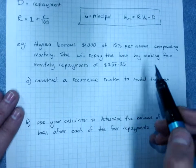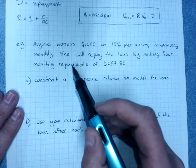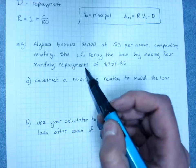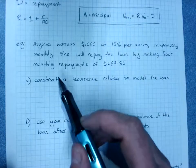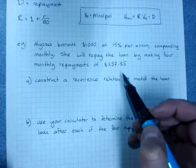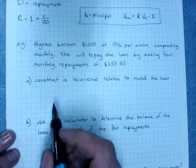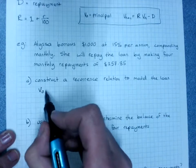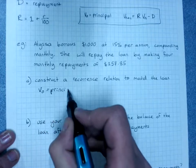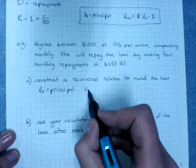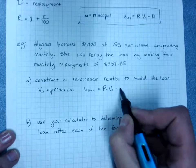Alyssa borrows $1,000 at 15% per annum compounding monthly. She will repay the loan by making four monthly repayments of $257.85. Construct the recurrence relationship. It's a good idea to write your rule: V₀ is the principal, and V(n+1) = R·Vn − D.